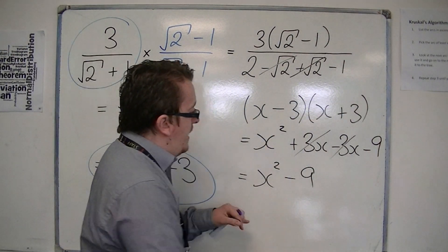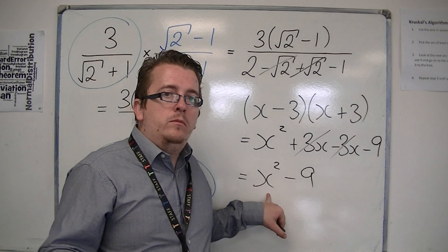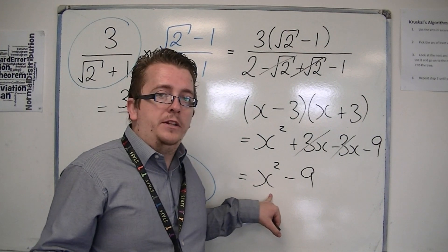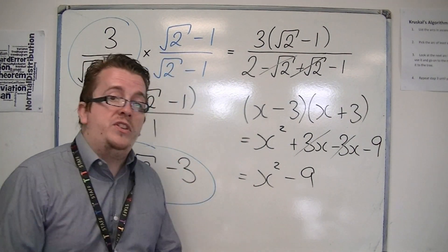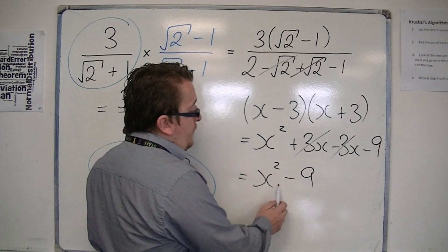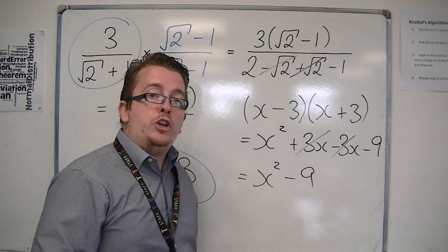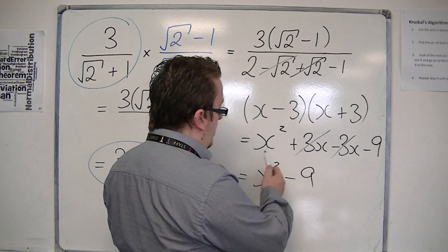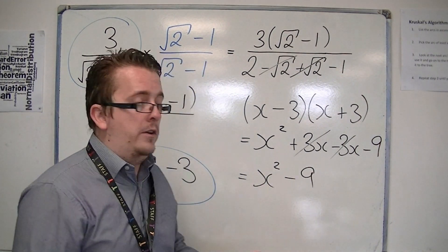So what you have here is that x could be any surd you like. It could be root 7, it could be root 10, anything you like. But if you square that surd, you will always get a rational number. So you'll get a rational number, take away a rational number, which is rational.